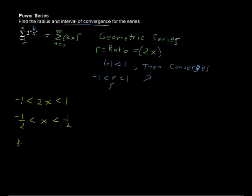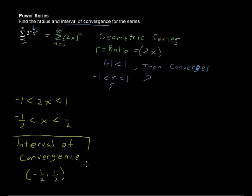So that interval of convergence is negative 1 half to 1 half. And notice the strict inequalities here, so negative 1 half and 1 half are not included. I'll write this down: the interval of convergence is negative 1 half to positive 1 half.